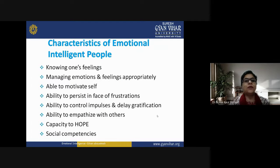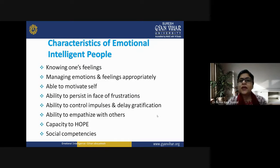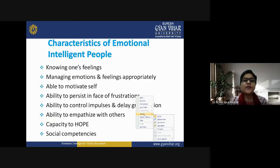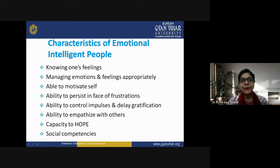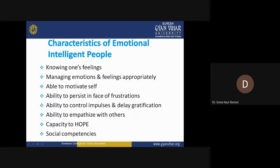Now let's understand the characteristics of emotionally intelligent people — why do we say some people are really very intelligent and others are not? First of all, knowing one's feelings: if you consider someone emotionally intelligent, they are always knowing their feelings and happy to understand about them. The second characteristic is managing emotions and feeling appropriately, as seen in these types of people.